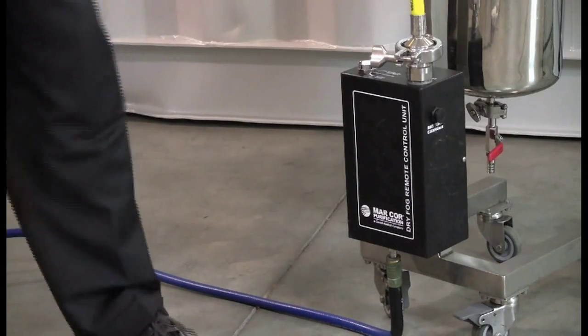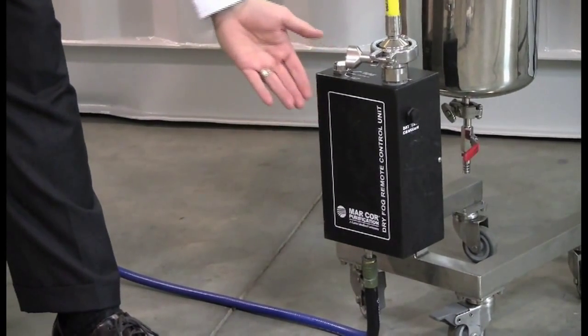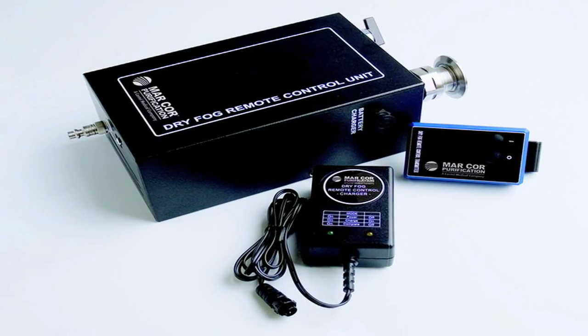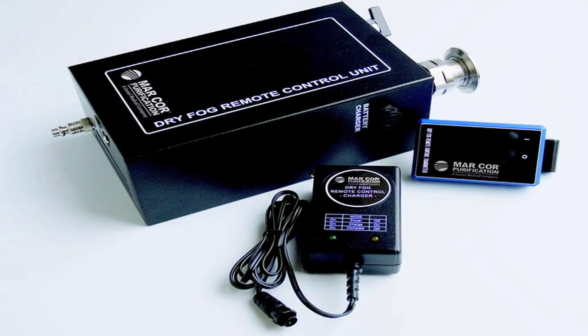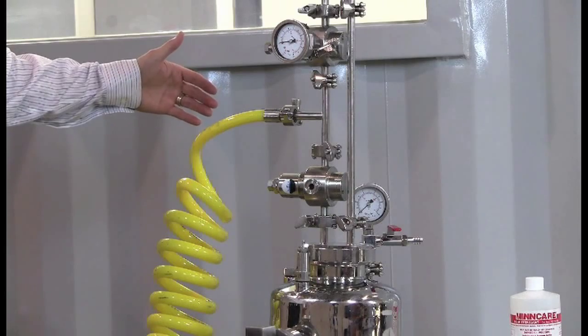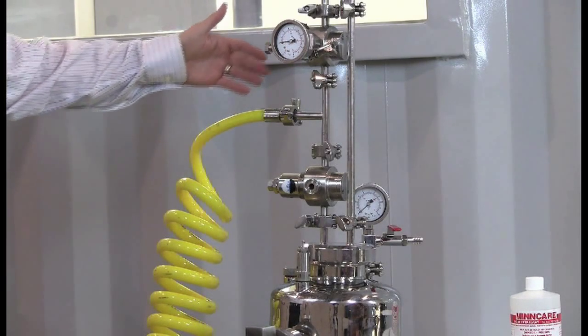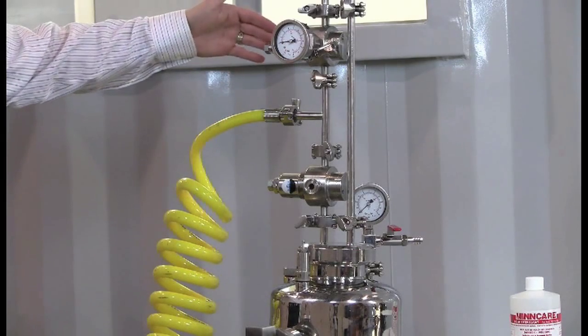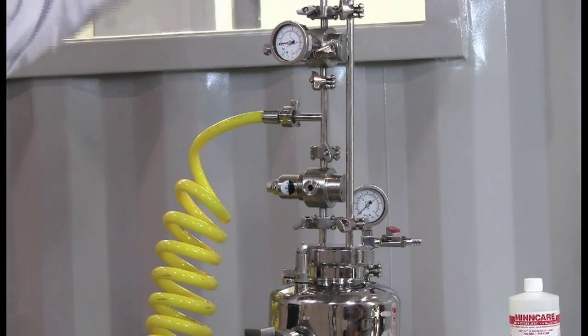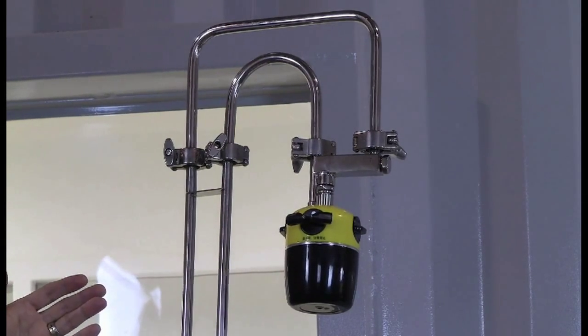Just to describe all the components of the unit, compressed air comes in the bottom of the dry fog remote. The dry fog remote turns on and off with this remote control when you're outside the clean room, allowing you to operate it and not be in the clean area. Compressed air connection to the dry fog unit. Pressure gauges and regulators regulating the compressed air to the tank as well as to the head.